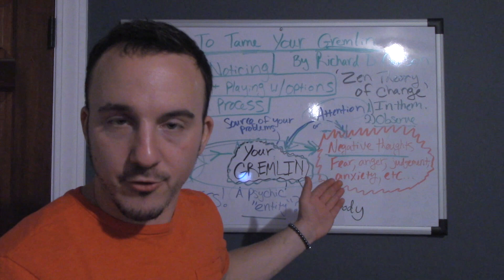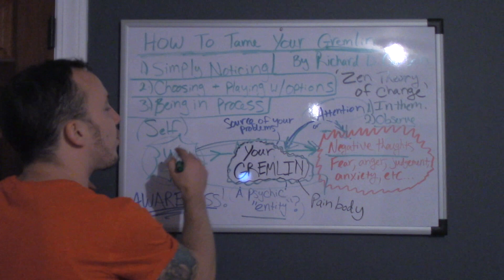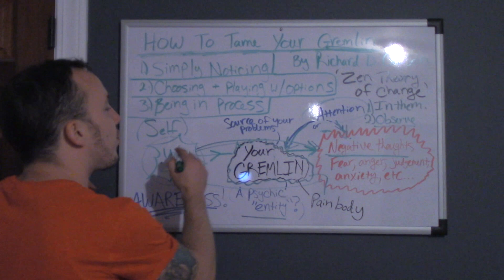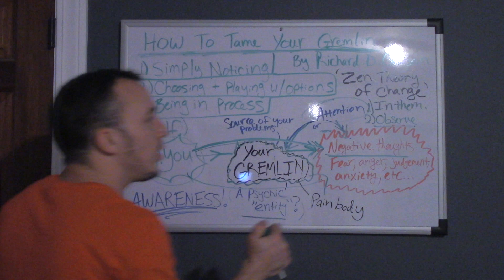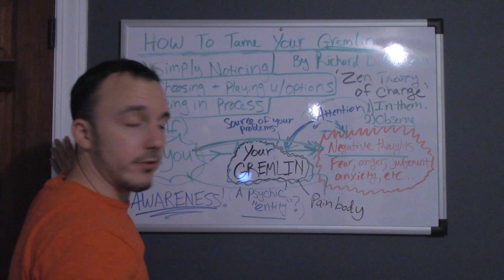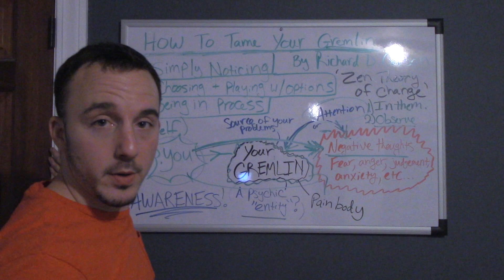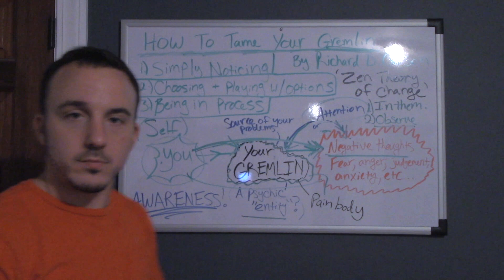So, rather than going directly into these thoughts and becoming them, the simply noticing technique says what you should do is you should begin to simply notice your negative thoughts, the negative thoughts that your gremlin is spewing to you, and also notice your gremlin. So, how do you do that? How do you notice this psychic entity, this thing that's invisible, this thing that you think is you?